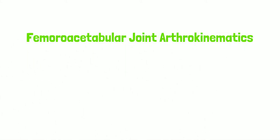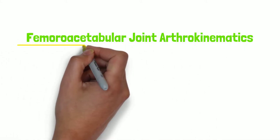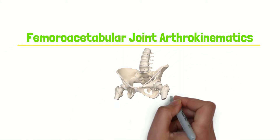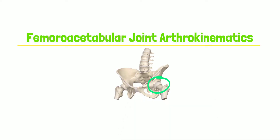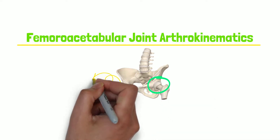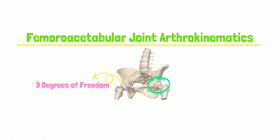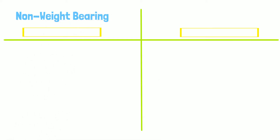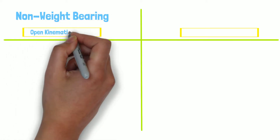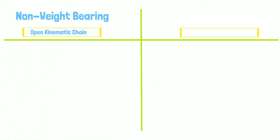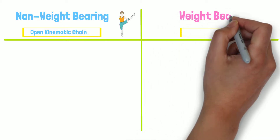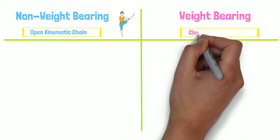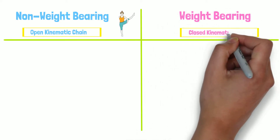Hello! In this video, we will examine femoroacetabular joint arthrokinematics. The femoroacetabular joint possesses three degrees of freedom, meaning it moves in all three cardinal planes. It is important to note that the femoroacetabular joint functions in non-weight-bearing, otherwise known as an open kinematic chain, and weight-bearing, otherwise referred to as a closed kinematic chain.